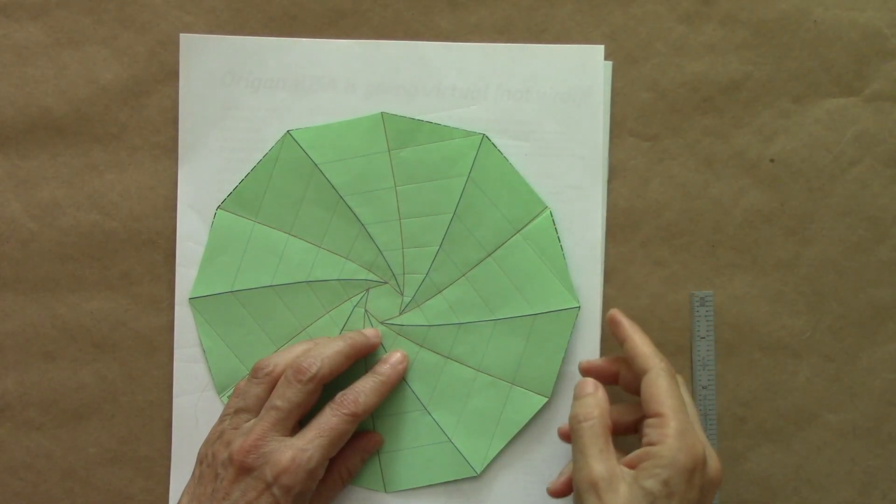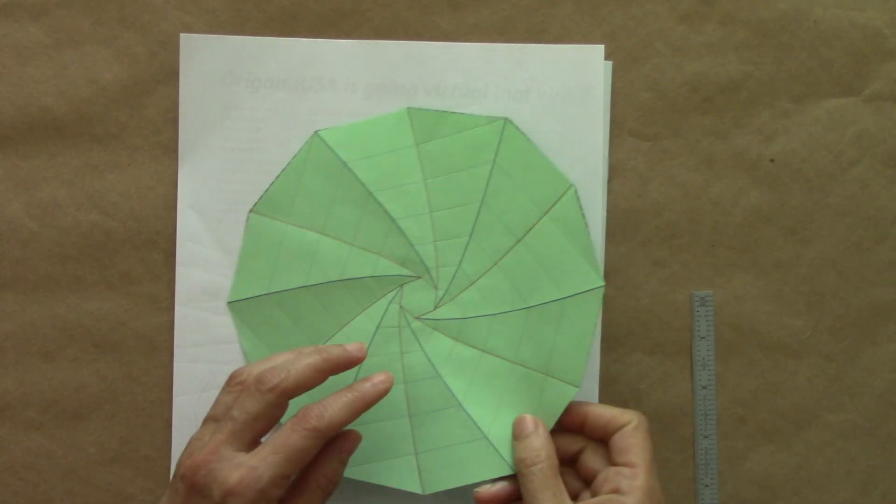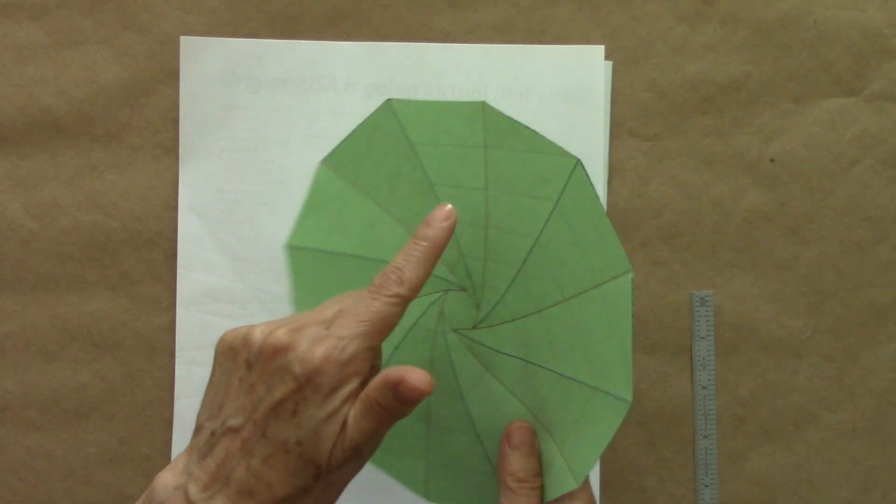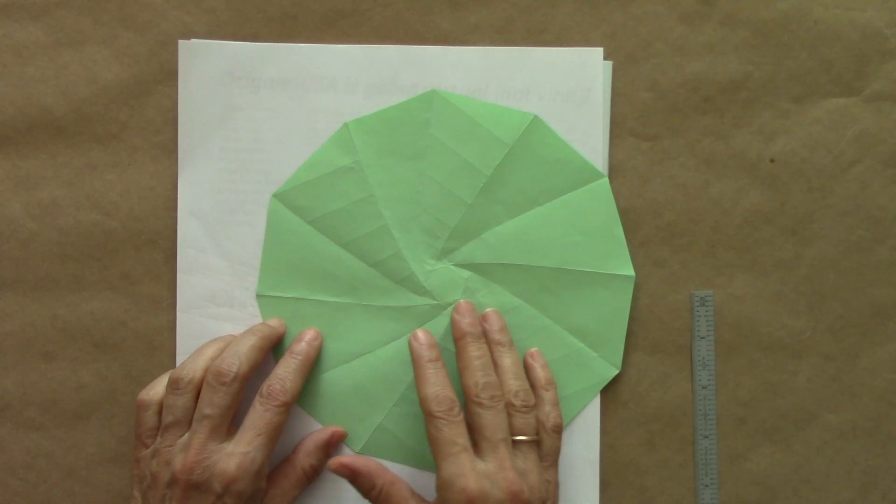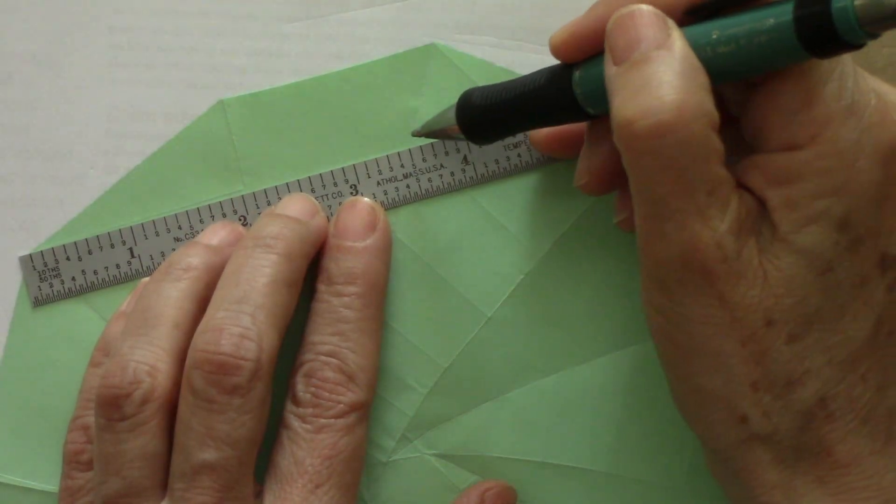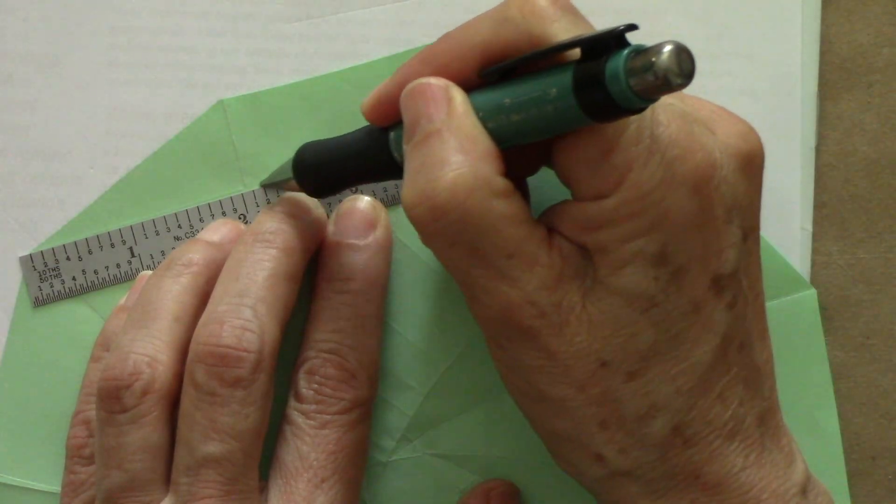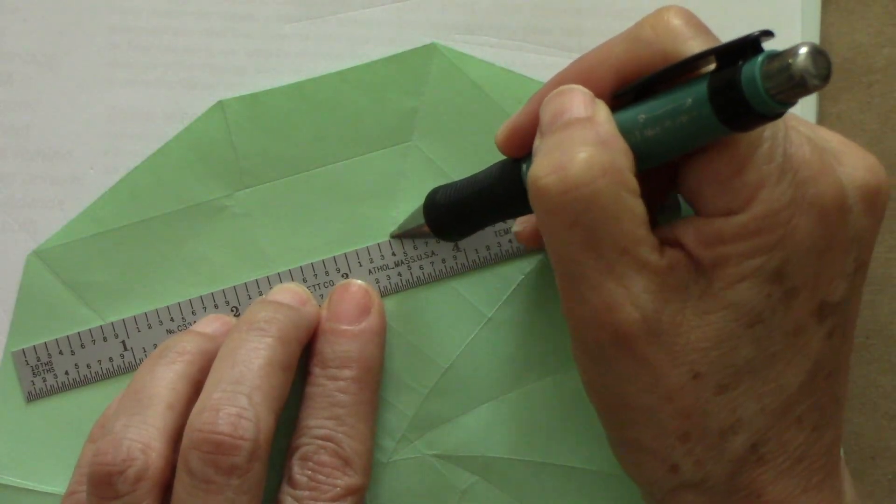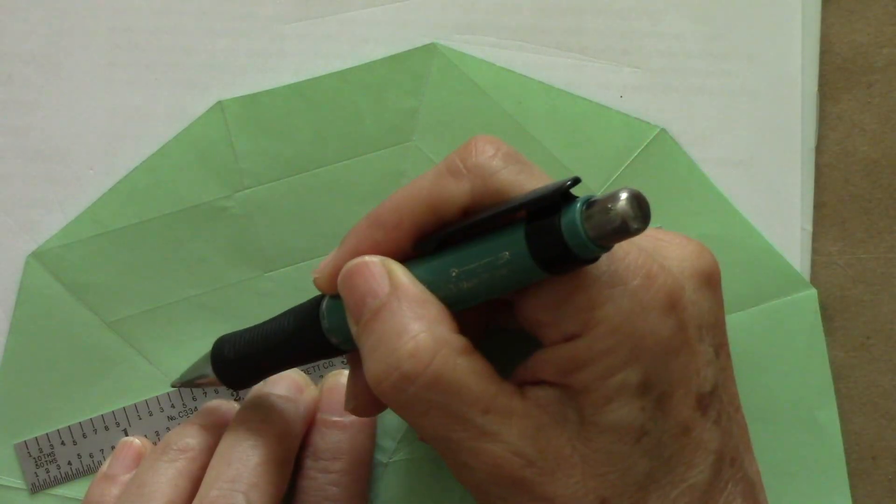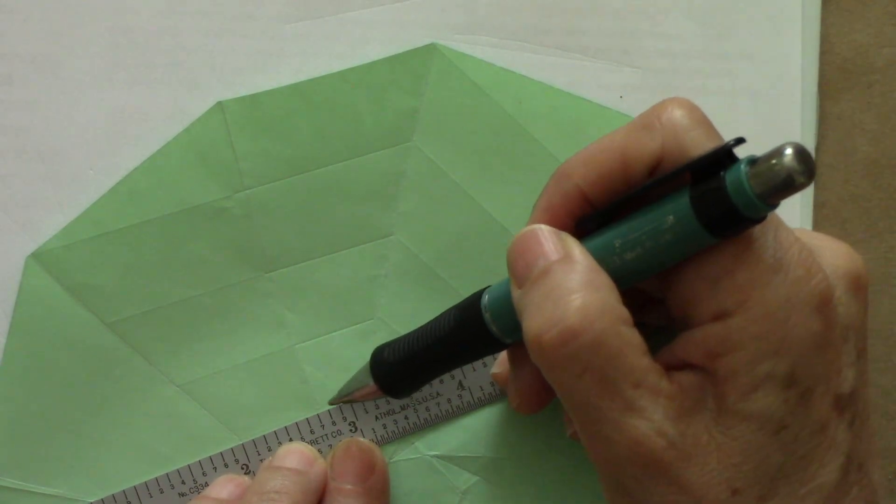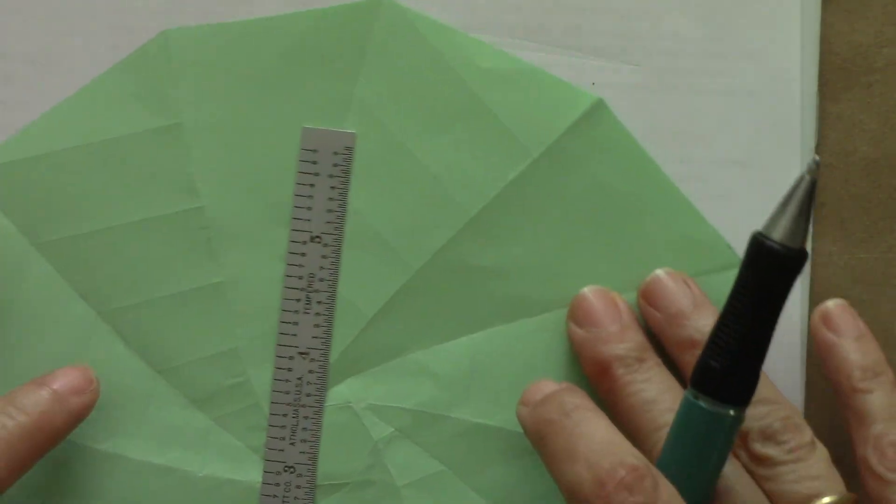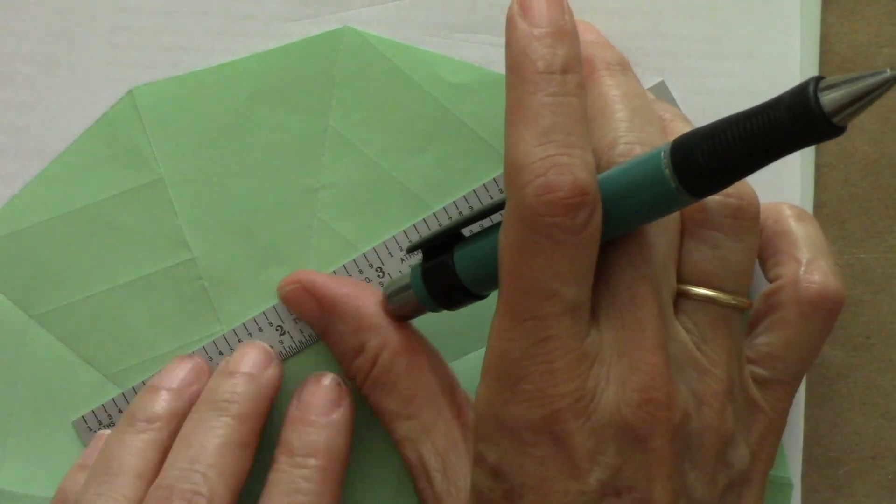The blue section, we are going to score on the other side. Mountain on this side is valley on this side. Since we already have some markings here and here, we just connect those markings.